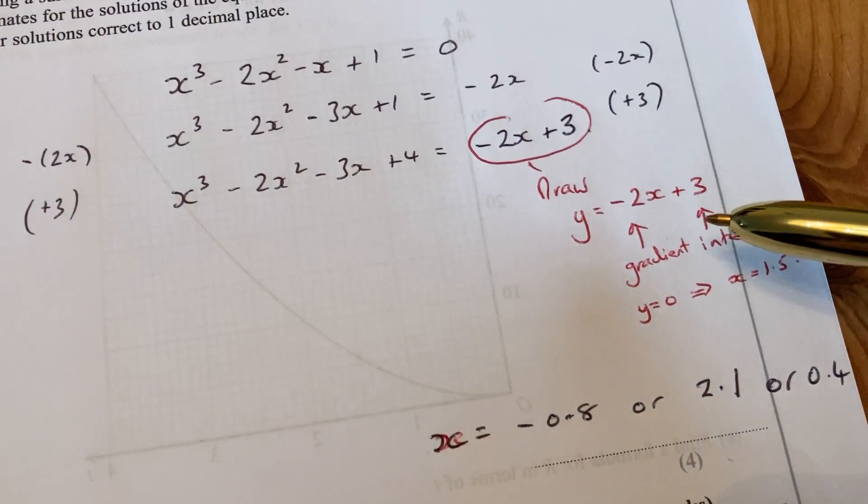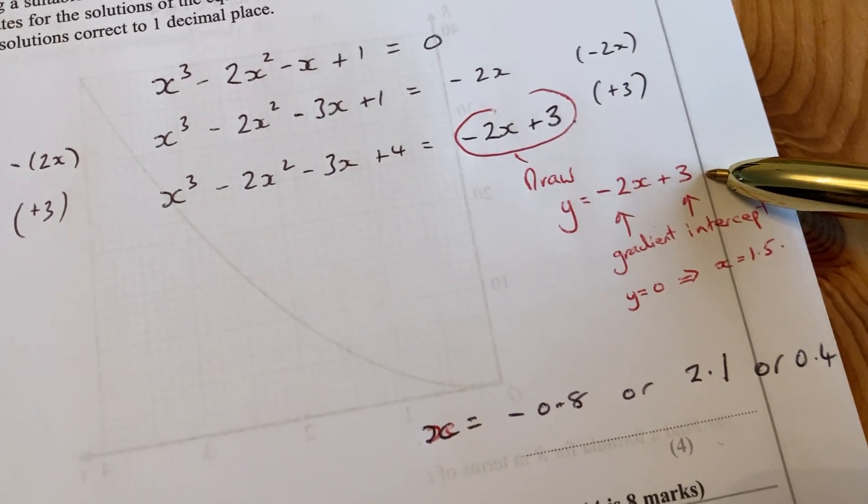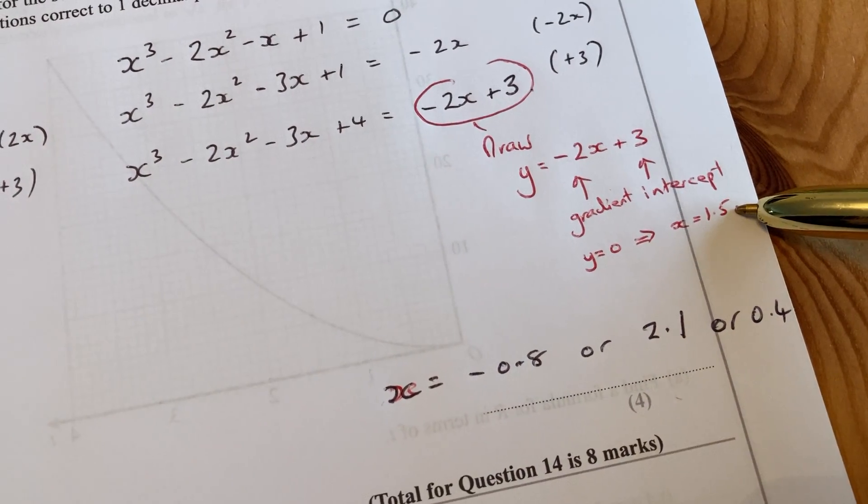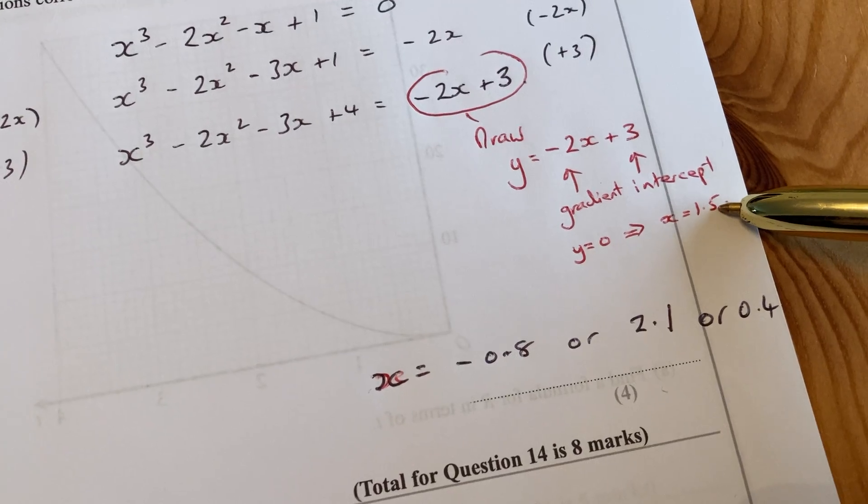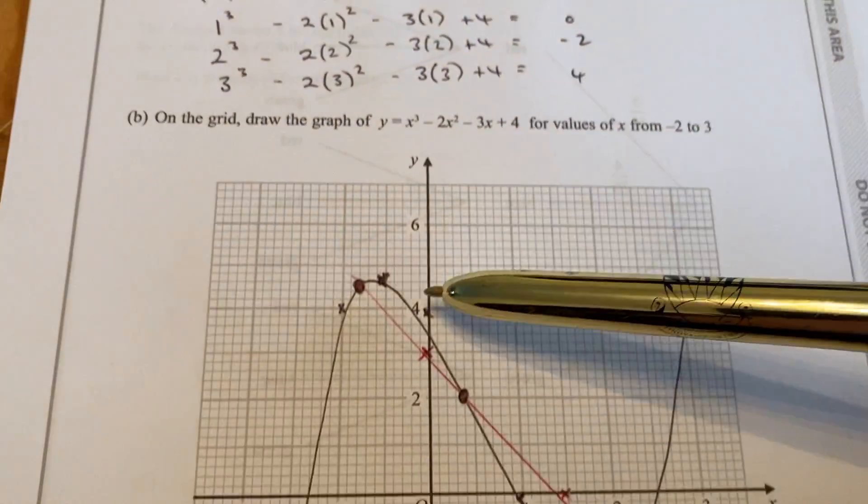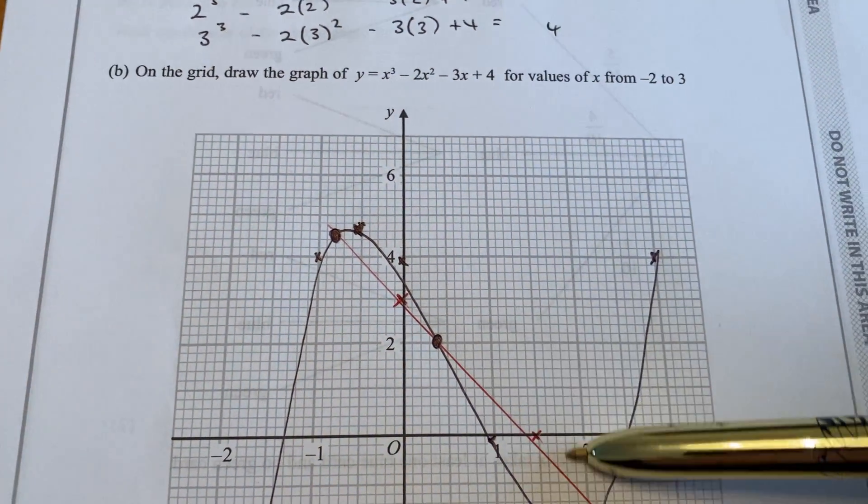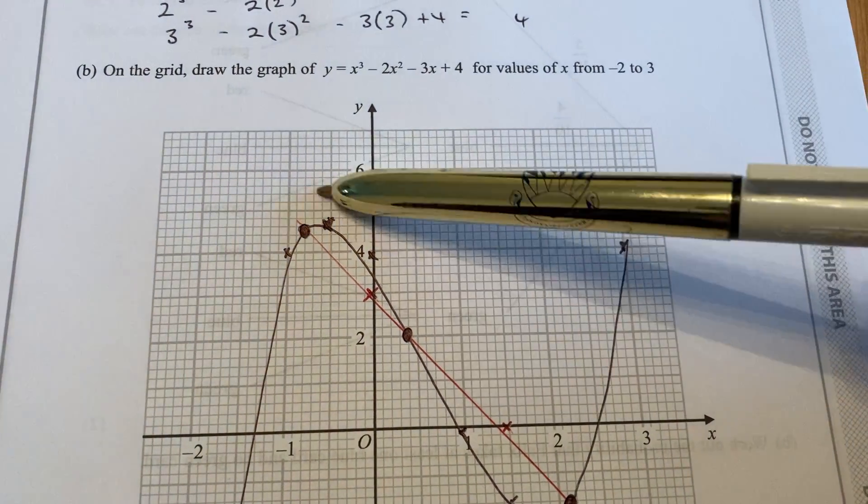I've transferred those values—intercept of 3 on the y-axis and intercept of 1.5 on the x-axis—and plotted those two points on the graph and connected them with a straight line.